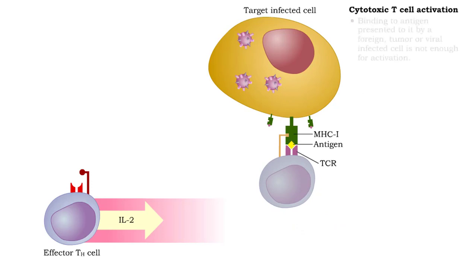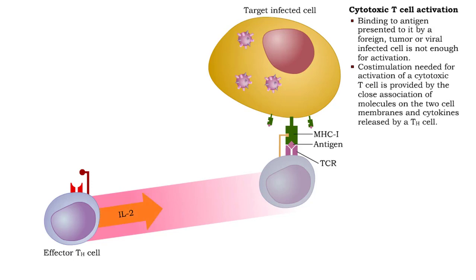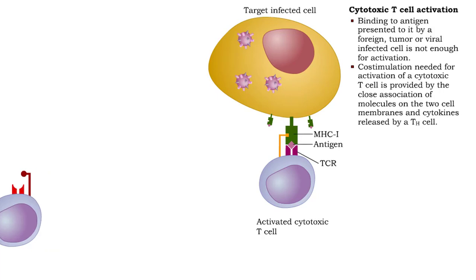Binding to an antigen presented by a foreign tumor or viral infected cell is not enough for activation of cytotoxic T cells. Co-stimulation provided by the close association of molecules on the two cell membranes and by interleukin-2 and other cytokines produced by helper T cells is needed.